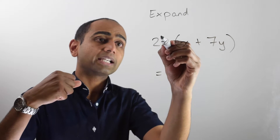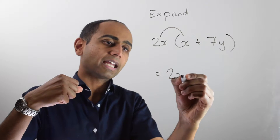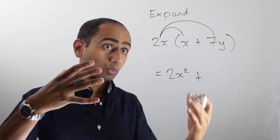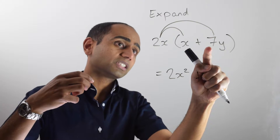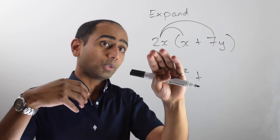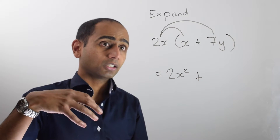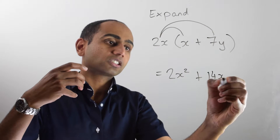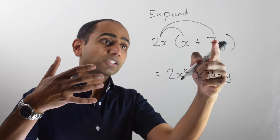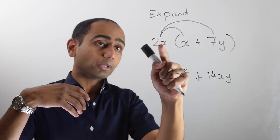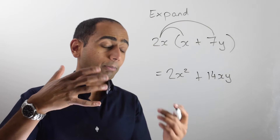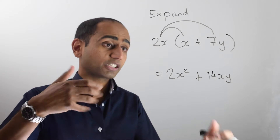In this example, I've got two x times x, which is going to be two x squared. And then I need to add on what I get when I multiply two x by seven y. Now that's two times x times seven times y. Remember, two x means two times x and seven y means seven times y. When I multiply all of those things together, I'm going to get 14xy. It doesn't matter what order you multiply things in — if I did two times seven first, that would give me the 14, and then I need to multiply by x and y as well, so I get 14xy. I could also write 14yx instead — that's perfectly acceptable.